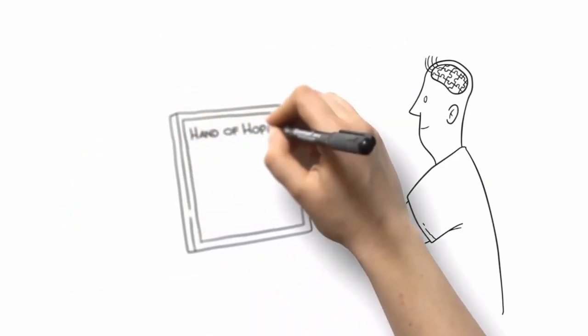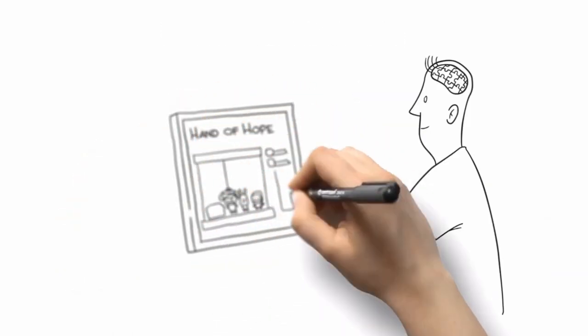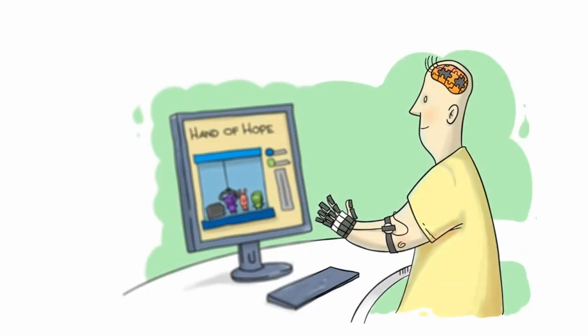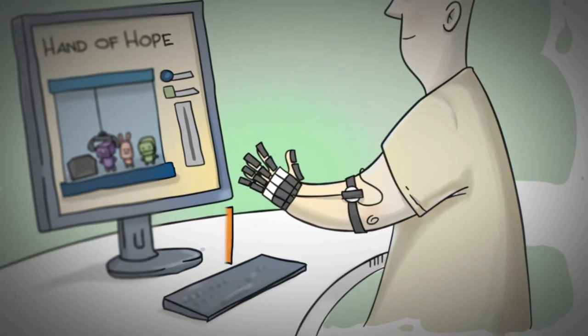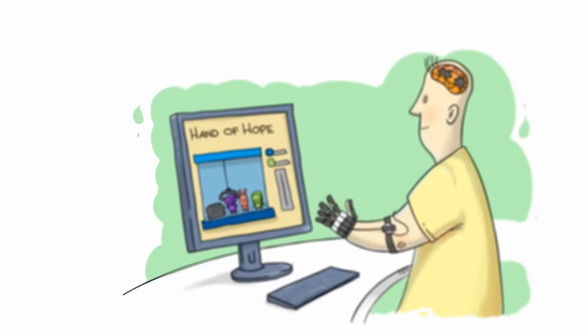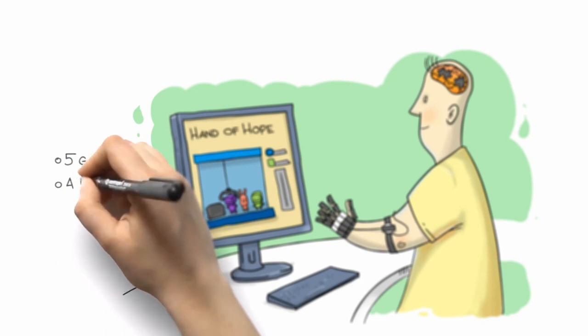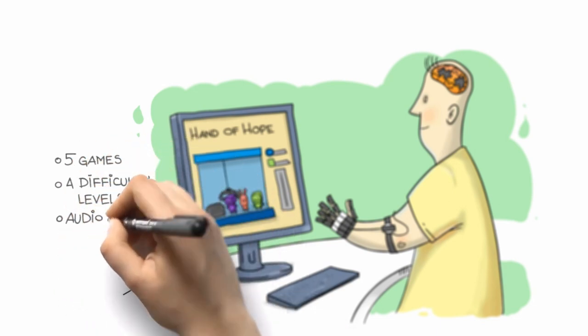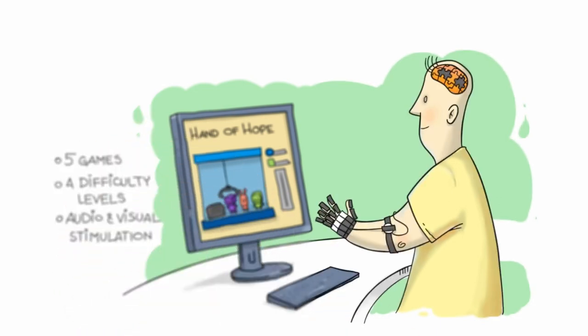Our innovative technology helps stroke survivors regain hand function through active rehabilitation training. Built upon the principles of neuroplasticity, motor relearning, and neurorehabilitation, the system offers five different games with four difficulty levels as well as audio and visual stimulation. The device can be moved by the will of a user. To complete tasks, users need to actively use their brain, thus training it and relearning motor skills.